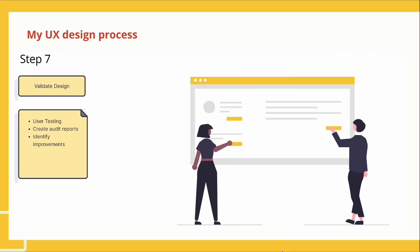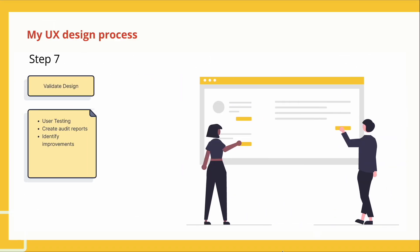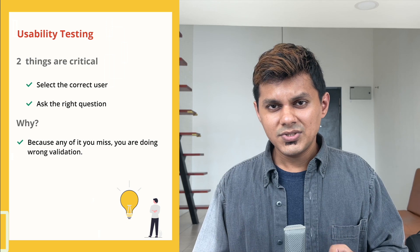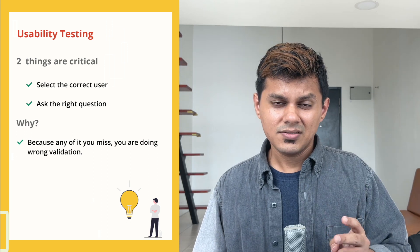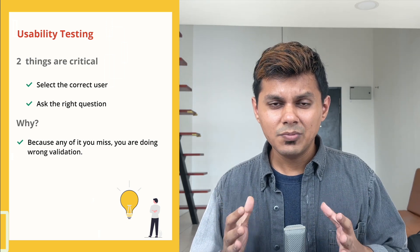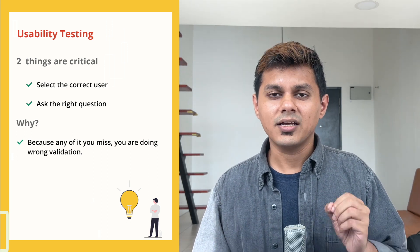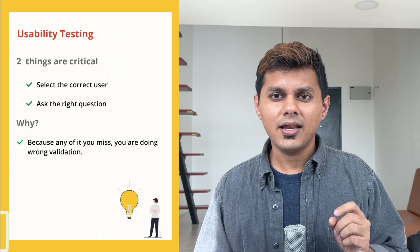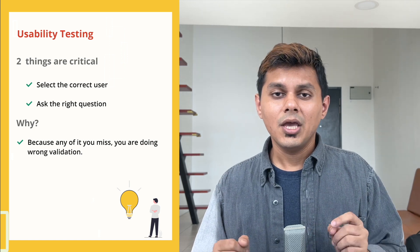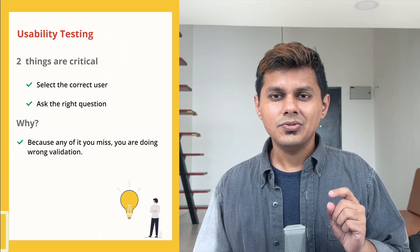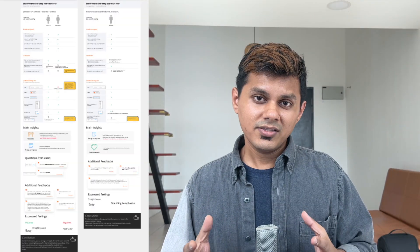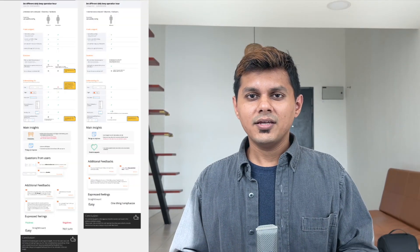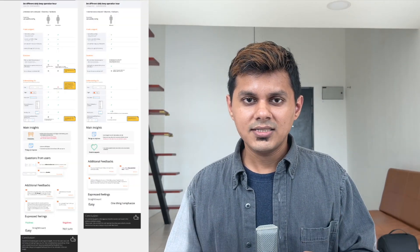Once my team and I agree with the design, it's time to do usability testing. I do three user tests because three users will give you 90% of your feedback. Quick tip: there are two things most critical in usability testing — first, you select the correct user, and second, you ask the right questions. If you miss either of those, you are doing the wrong validation. After the testing, I create the testing report and make final design changes.